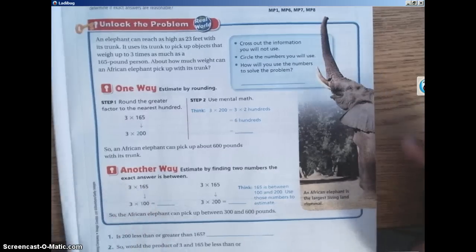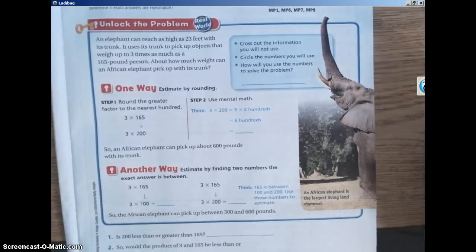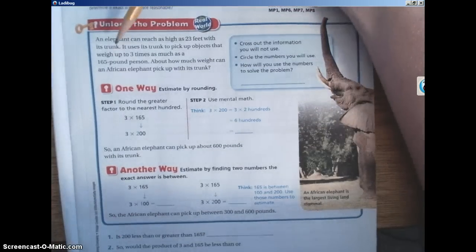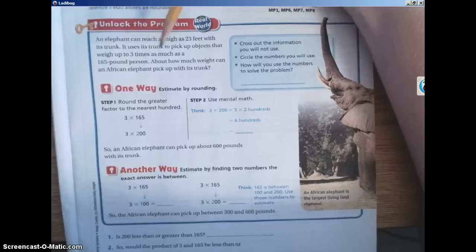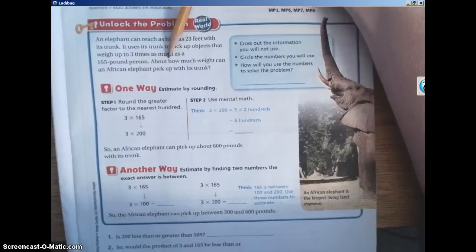Moving on down to unlock the problem. First, let's read the question together. Follow along with me. An elephant can reach as high as 23 feet with its trunk. It uses its trunk to pick up objects that weigh up to three times as much as a 165-pound person. About how much weight can an African elephant pick up with its trunk?